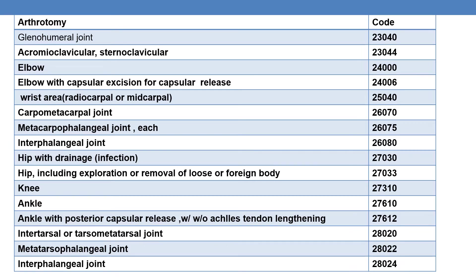For arthrotomy of the glenohumeral joint, report 23040. For acromioclavicular or sternoclavicular joints, both use CPT 23044. For arthrotomy of the elbow, report 24000; with capsular excision for capsular release, report 24006. For the wrist — either radiocarpal or midcarpal — report 25040. For carpometacarpal joint, report 26070; for metacarpophalangeal joint (each), report 26075; and for interphalangeal joint, report 26080.